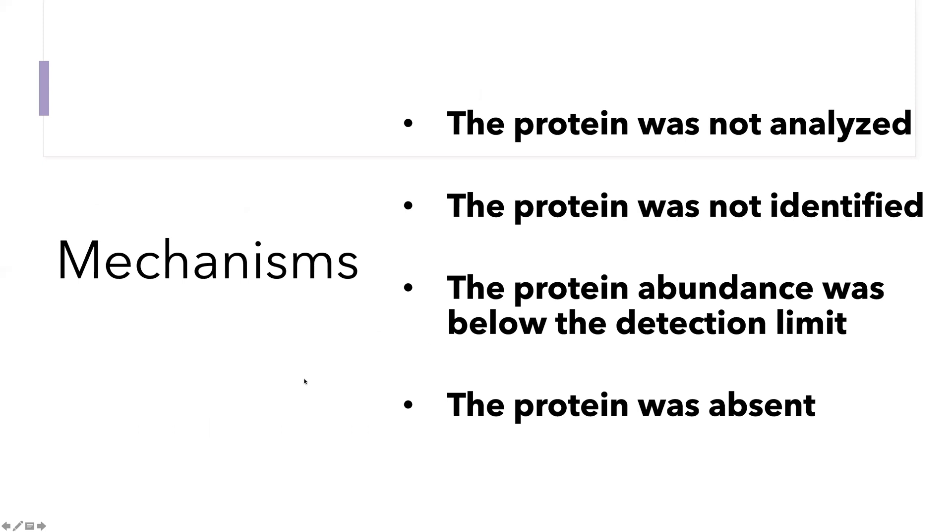I would encourage you to go back to Nikolai's first video where he outlined various mechanisms by which a protein or a peptide might not be measured, and think about, for each of these various mechanisms, whether you would characterize it as missing completely at random, missing at random, or missing not at random, and also to think about whether the mechanism is itself known. You could write down a probability model for exactly how that missingness arose or whether that was an unknown mechanism.